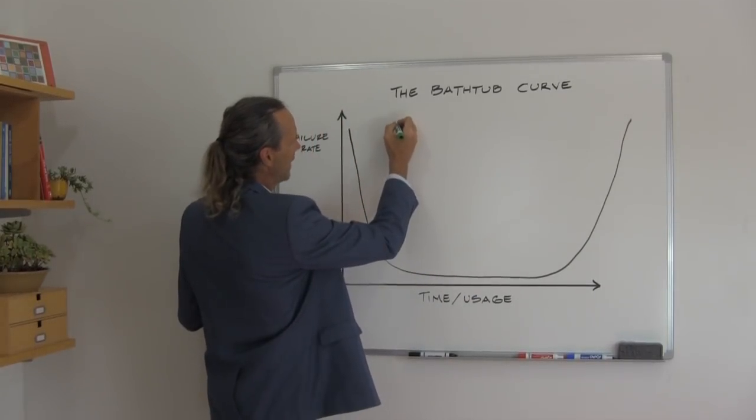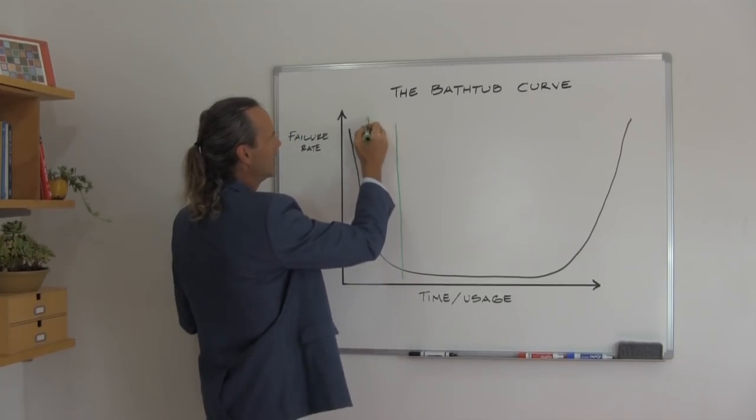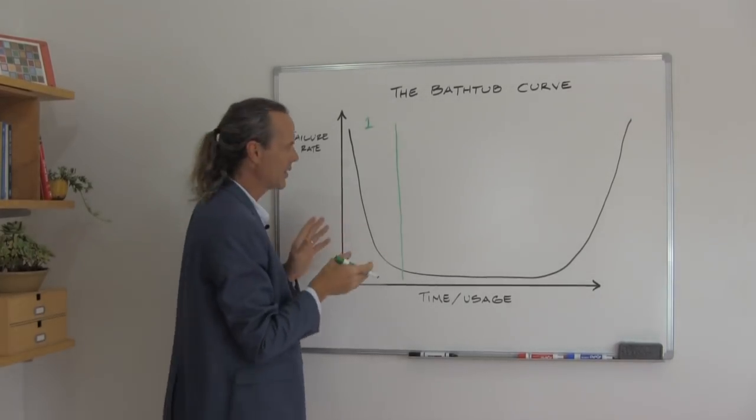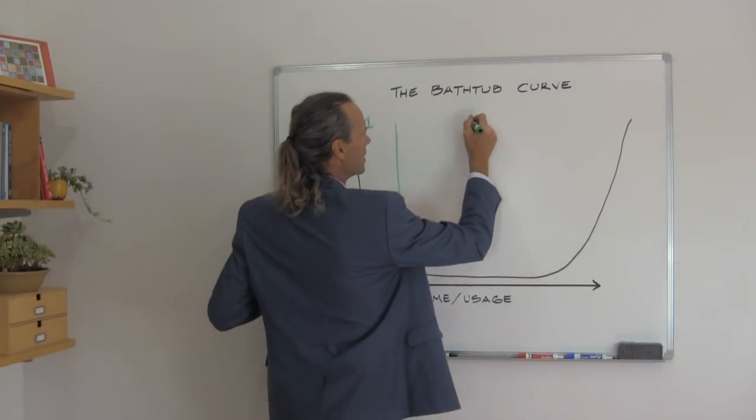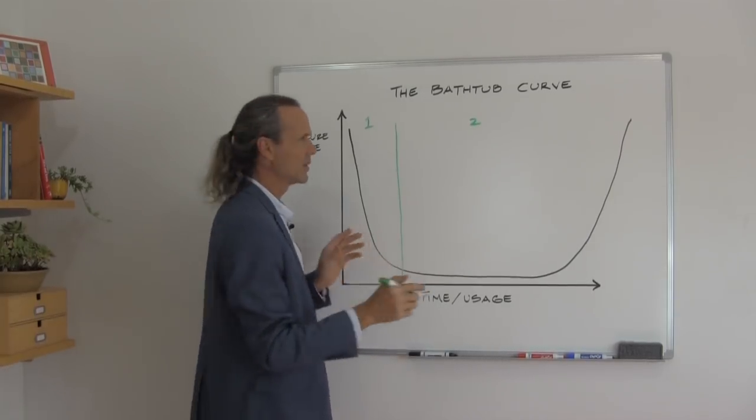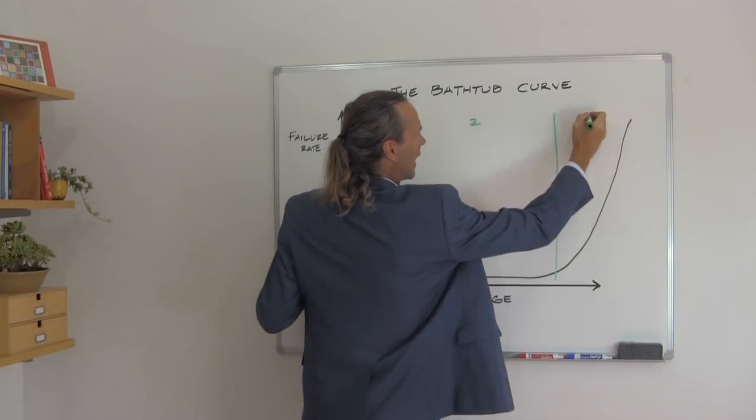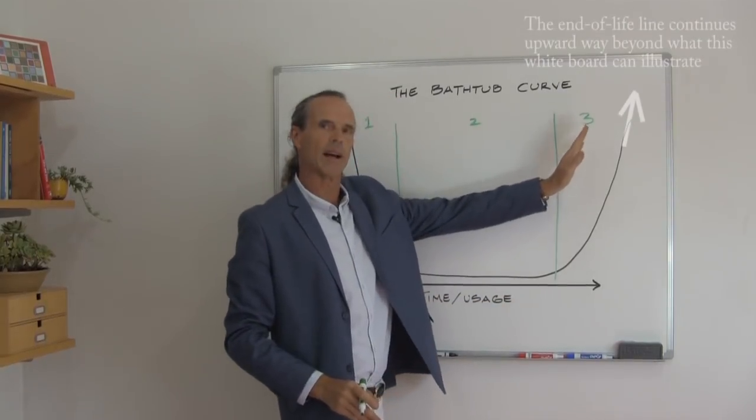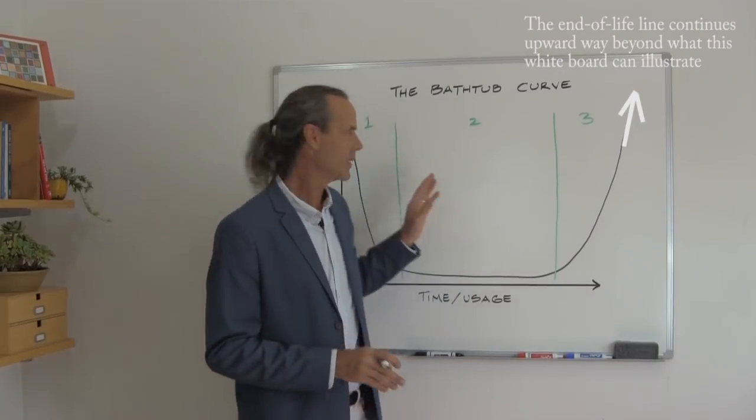Now the bathtub curve has three phases to it. You have the initial phase, which is when all the kinks are getting worked out. This is the time when you bring the car back to the dealer. The second phase is the stable phase where everything is pretty much working just as it was designed. And then you have the third phase, which is the end-of-life phase, and this is where all of the components are starting to break down one by one until the car is ready for the junker.